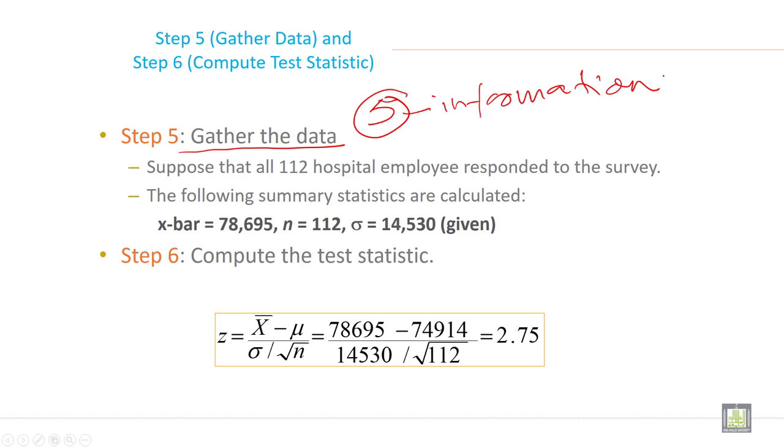Suppose that all 112 hospital employees responded to the survey and the following summary statistics are calculated: x-bar = 78,695, n = 112, σ = 14,530. Just write it here and then go to step 6.